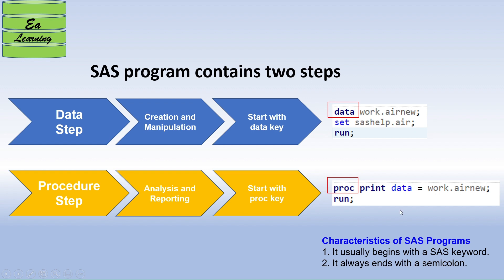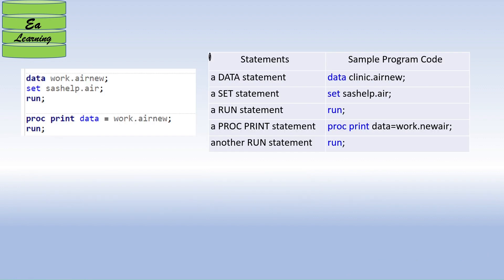Here is an example of a data step program and an example of a proc step program. You can see the basic characteristics of a SAS program: it always begins with a SAS keyword, either 'data' or 'proc' depending on the type of program, and each statement always ends with a semicolon.